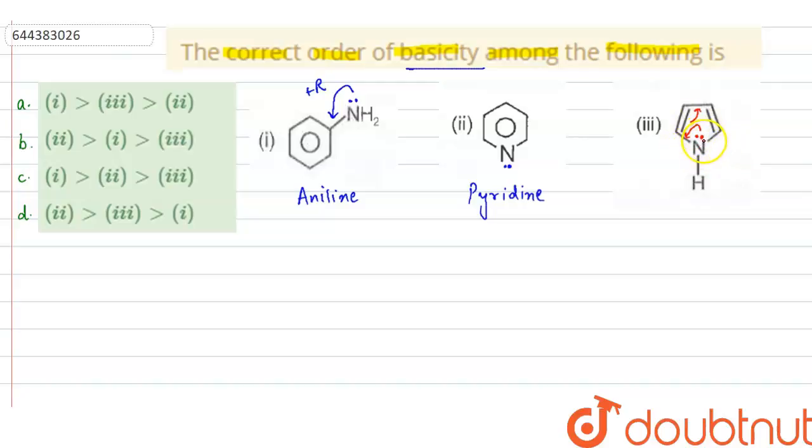So here no electrons are available for the protonation or you can say donation. So it will be having less basic character. So in aniline, there is delocalization of electron. In third option, this is known as pyrrole.